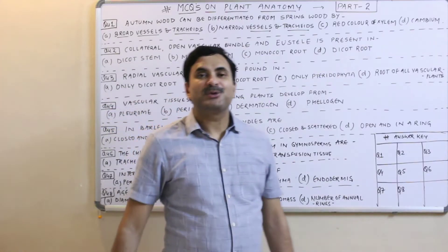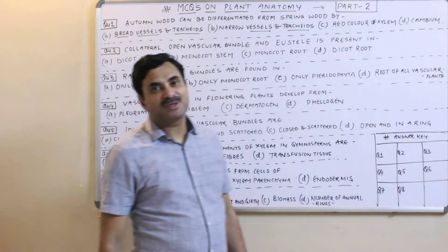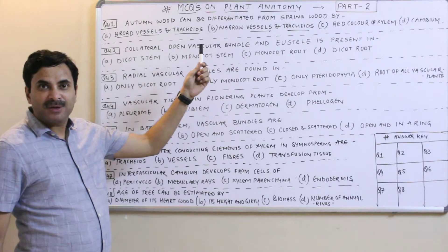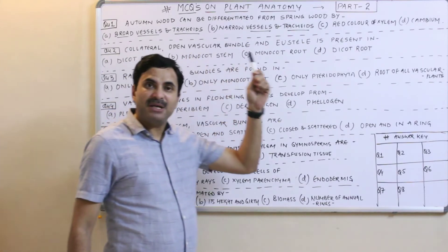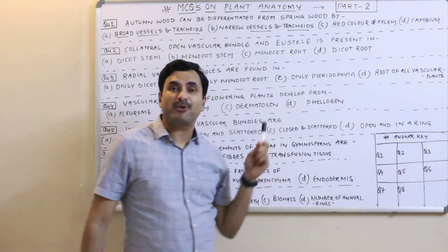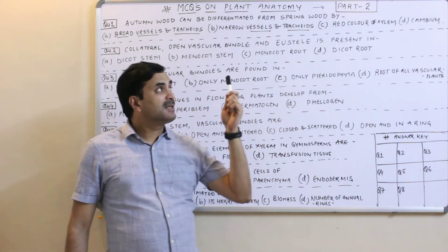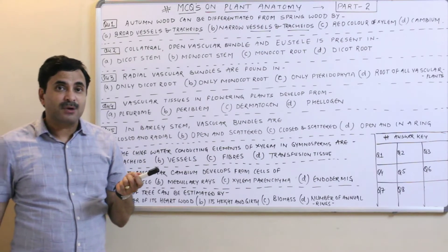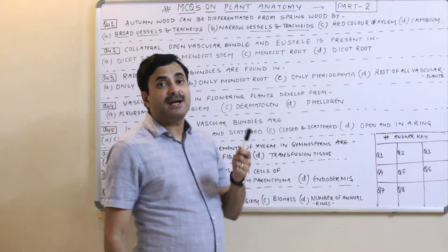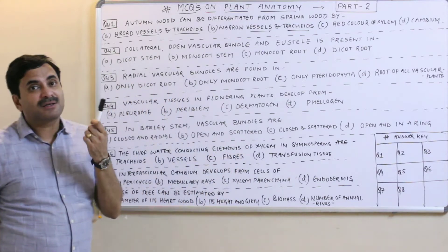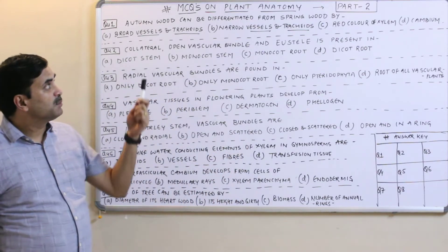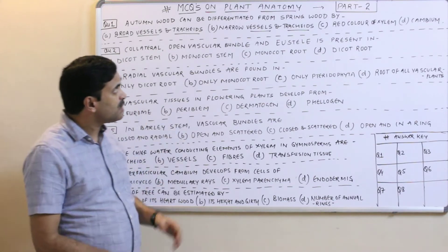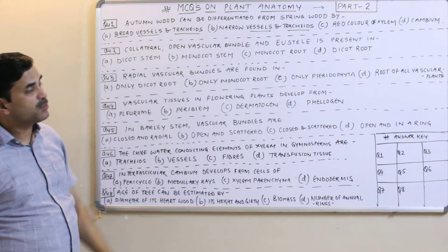Hello to all. Today we will be discussing some important MCQs which are based on plant anatomy for the NEET examination. This topic is very important because in this unit the tissues, secondary growth, tissue system, and internal structure of the root, stem, and leaves are studied. It is the backbone of biology and questions are asked in the examination.